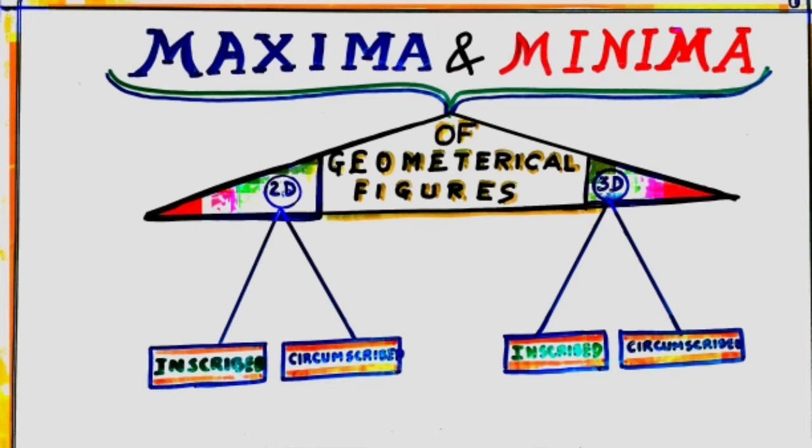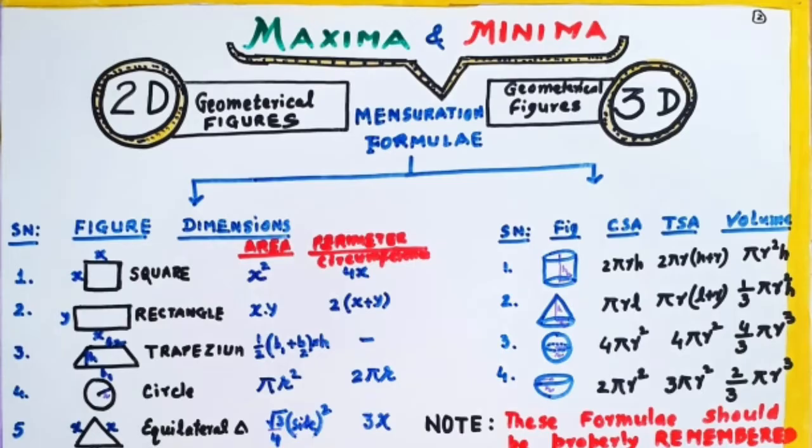So these types of questions mostly appear in plus 2 and other competition exams. And after that, we shall be going ahead with some standard geometrical results to maxima and minima. That will be coming up right now. So look here, the mensuration figures, formally, first of all, we must know. And these formulas, as you know,